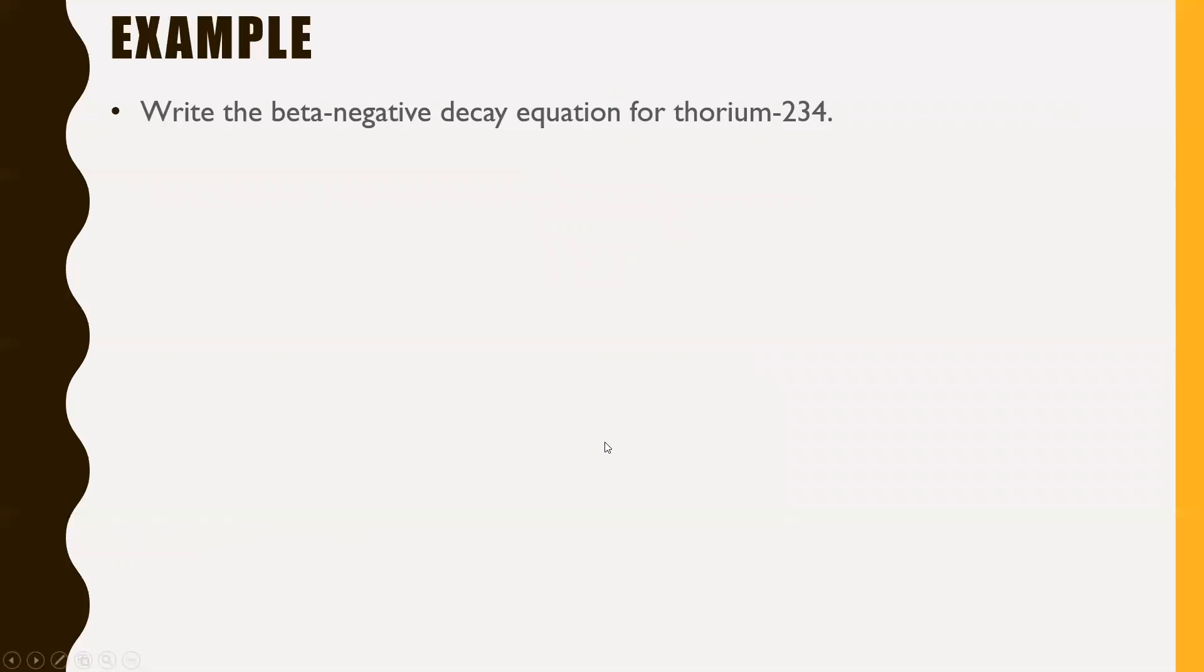All right, next question. This one goes really quick, actually, as long as you know what you're doing. Write the beta negative decay equation for thorium-234. I'll give you a second to work on this. Just pause the video here. All right, so I'll go over the answer now. Like I said, this one's going to go real quick. You just have to use your periodic table. Thorium-234. Thorium, I just know, is TH. If you didn't know that, you can look at your periodic table. 234 is up here. Something I don't know about thorium is its atomic number. That's the bottom left number here.